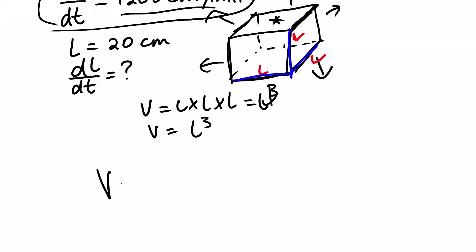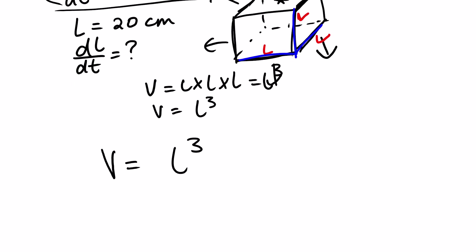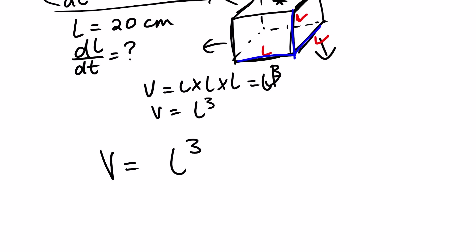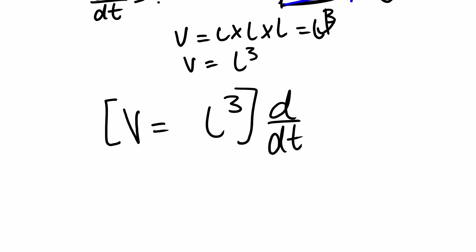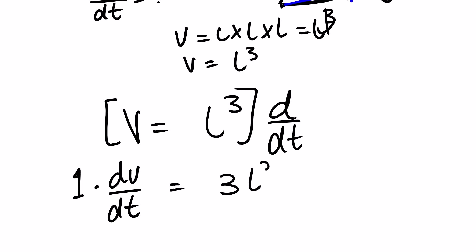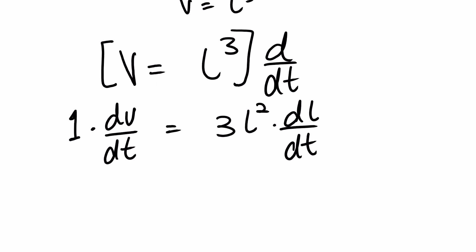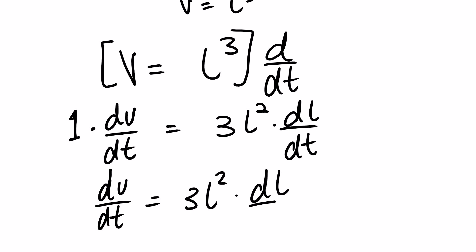Focusing on this equation, we should be able to differentiate it with respect to time t. The derivative of V gives dV over dt, which equals the derivative of L cubed, giving 3L squared multiplied by dL over dt. So we have dV over dt equals 3L squared multiplied by dL over dt.